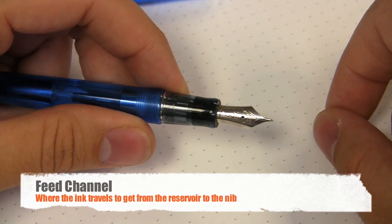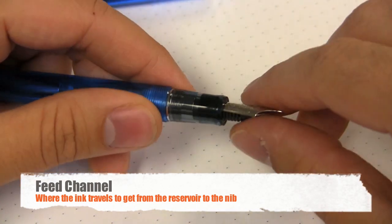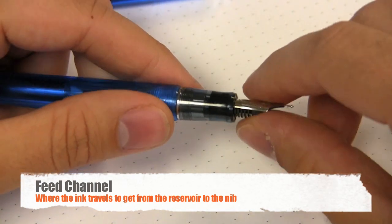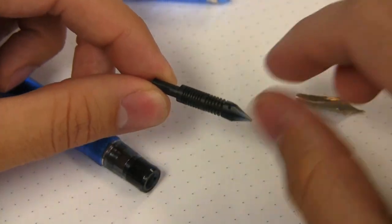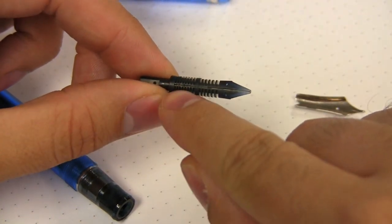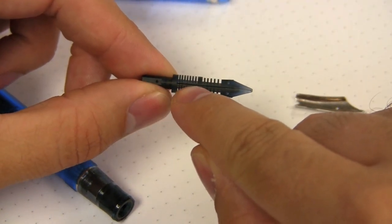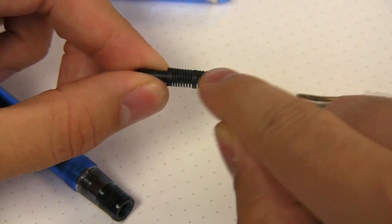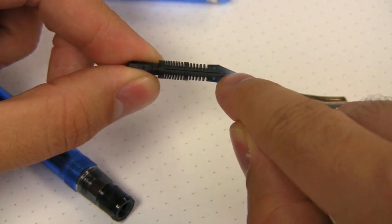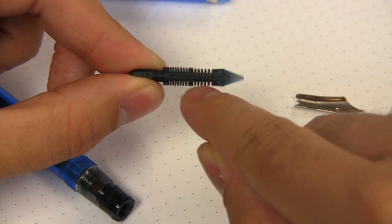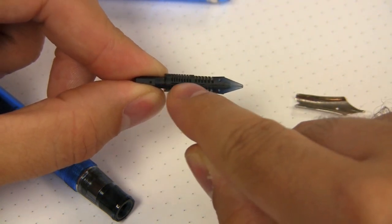The channel, otherwise known as the feed channel, is the part of the feed where the ink actually travels down. I'm actually going to pull this feed out of the pen and you can see that there's this very small slit that's cut that goes all the way through on the top of the feed. This is where the ink actually travels down to get to the front where it mates up with the nib. This little slit right here, that is called the channel.